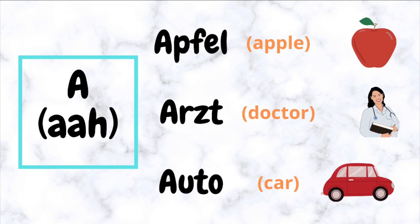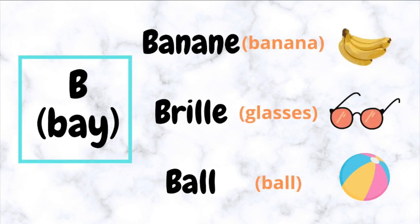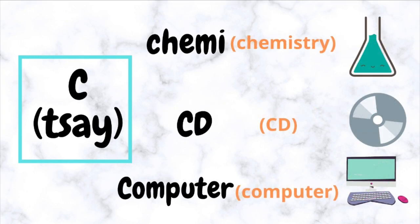A — for example: Apfel, Arts, Auto. B (Bay) — for example: Banana, Brilla, Bal.